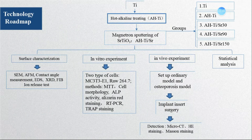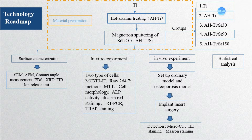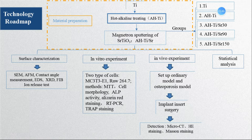The technology roadmap works as follows. We prepared materials and obtained EHTIA, EHTISR-30, EHTISR-90, and EHTISR-150. We then performed surface characterization, in vitro experiments, in vivo experiments, and statistical analysis.